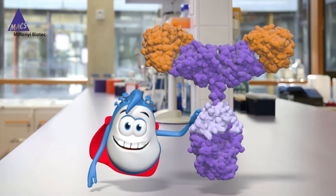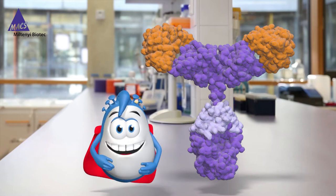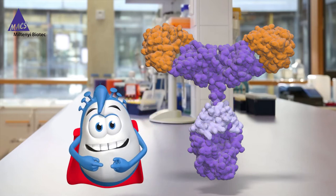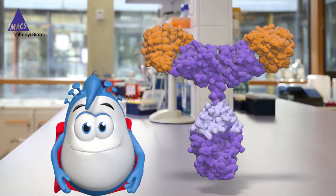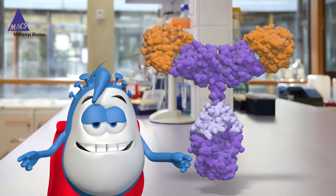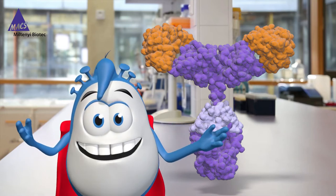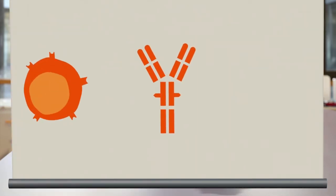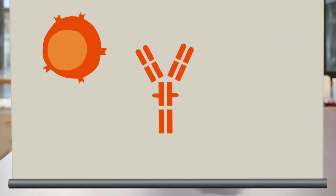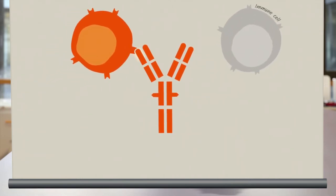When antibodies detect pathogens in the body during an infection, they mark them by binding to them with their specific antigen-binding region. The FC region of an antibody then serves as a docking station for immune cells, so that they can recognize and eliminate the marked pathogens. It's a very important role of our antibodies during immune responses, but in your flow cytometry experiments, it can be really annoying.